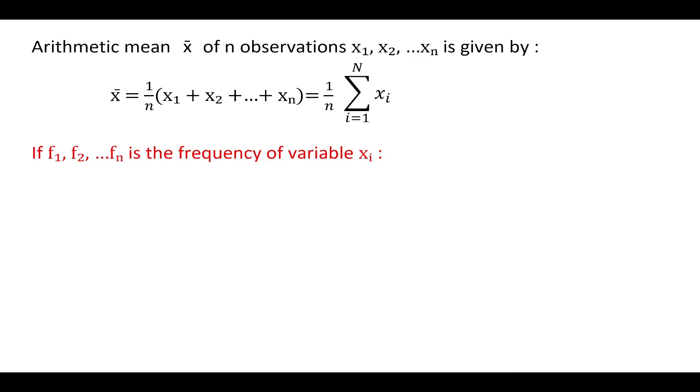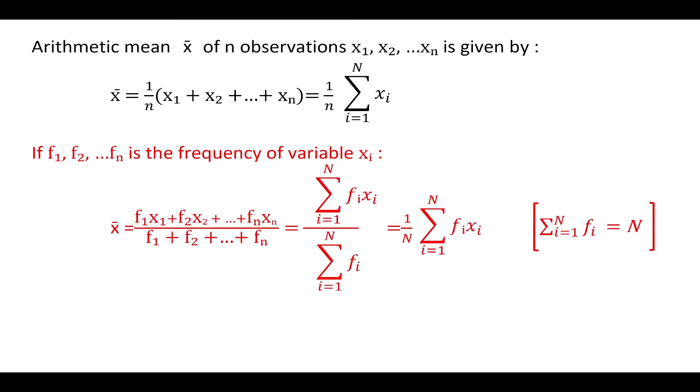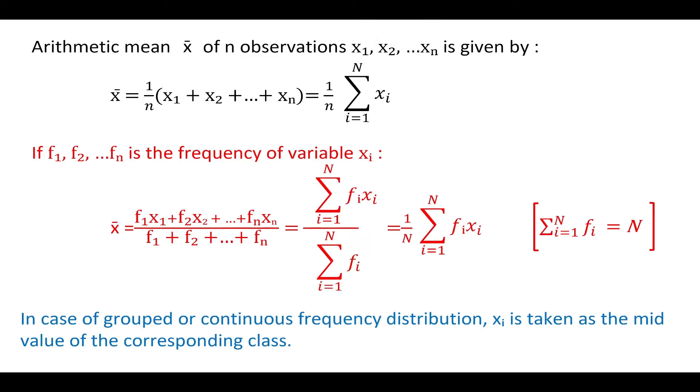Arithmetic mean for a group distribution is given by x bar is equal to 1 upon summation of all the frequencies into summation of product of frequency and the variable xi. If xi is a single class, then xi represents that class. However, in case xi is a class interval, then the midpoint of the class interval is taken as xi.